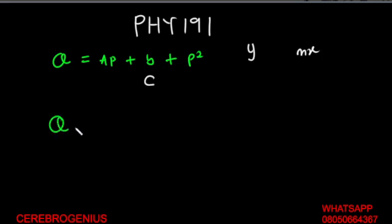So that means that this is completely a variable, this is also completely a variable. What do you do? You bring them together, so it becomes Q minus P² equals AP plus b. Don't forget that this is our C which is completely a constant. This is Y which is completely a variable with no constant related with it.